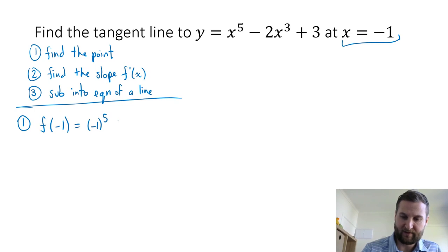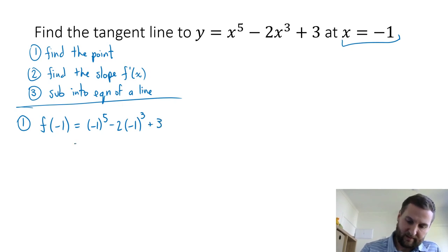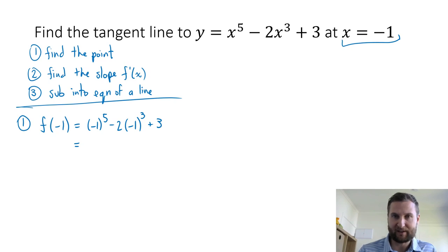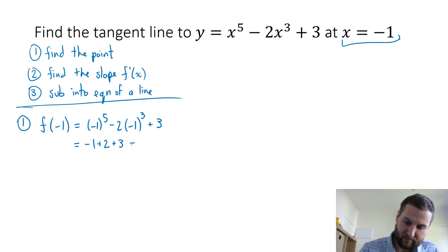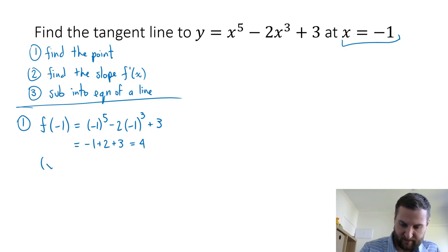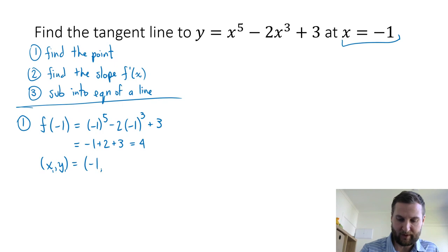I need to find f(−1). So this is (−1) to the power 5 minus 2 times (−1) cubed plus 3. When you have a negative to an odd exponent, it stays negative. So this is minus 1 minus 2 times minus 1, which becomes positive 2, then plus 3: minus 1 plus 2 plus 3 equals positive 4. So my point x1, y1 is minus 1 comma 4.